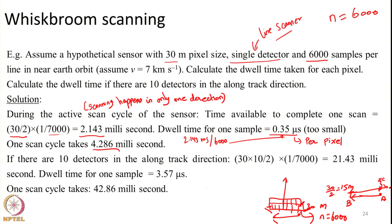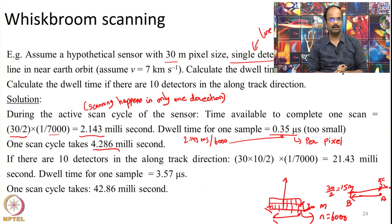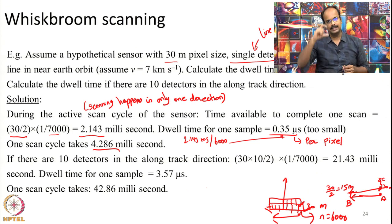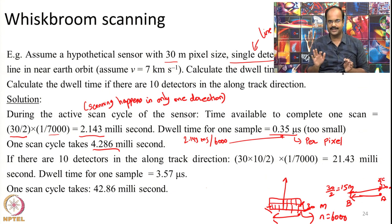Hence, to collect data about one pixel the sensor has only 0.35 microseconds — an extremely small value. This is assuming a single detector and scanning in only one direction, which is highly restrictive.